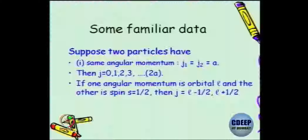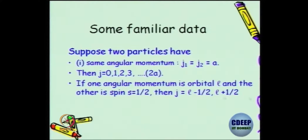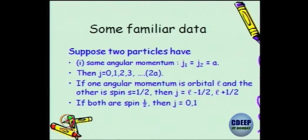If one angular momentum is orbital and the other is spin-half, the maximum is l plus half and the minimum is l minus half. The difference between these two is only one step, so there are only two possibilities for the total angular momentum j when you couple orbital angular momentum to spin-half. If both are spin-halves, by the same argument putting a equal to half, j can be 0 or 1.